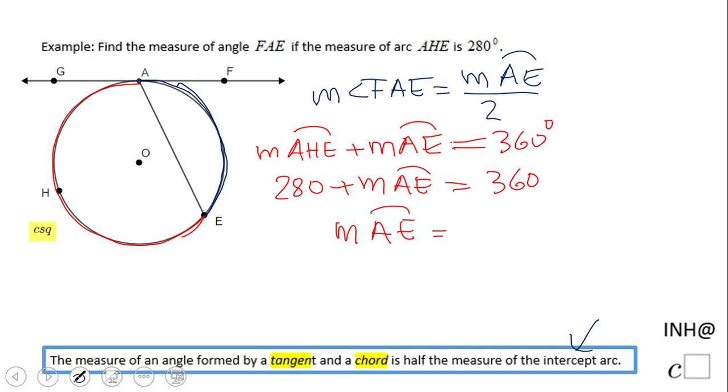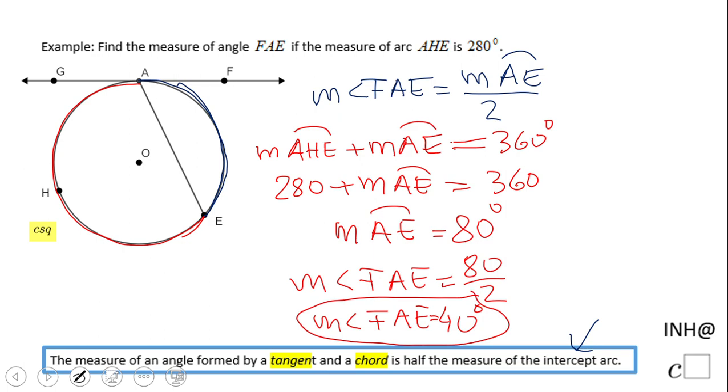The measure of arc AE is 360 minus 280, which is 80 degrees. We can go back here, and the measure of angle FAE will be 80 divided by 2, which is 40 degrees.